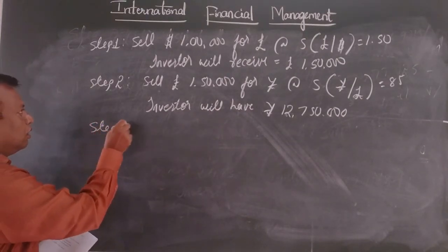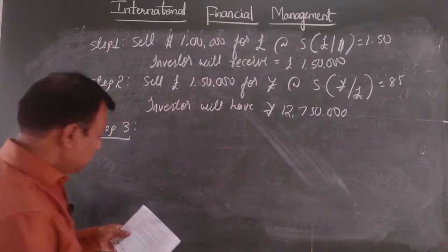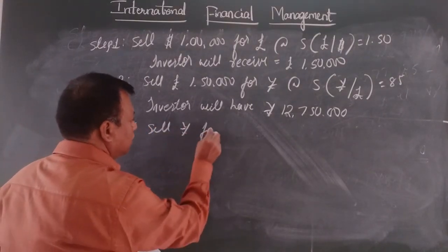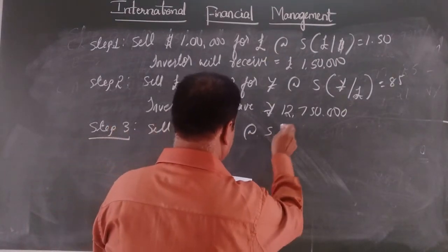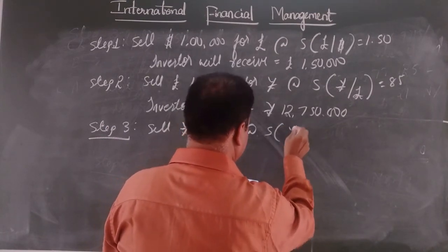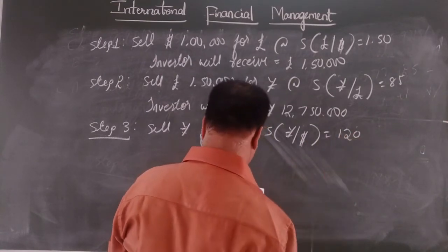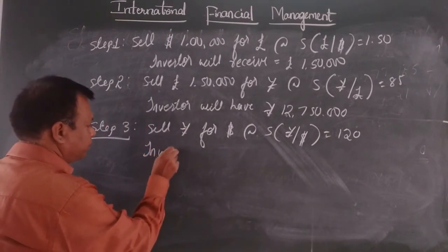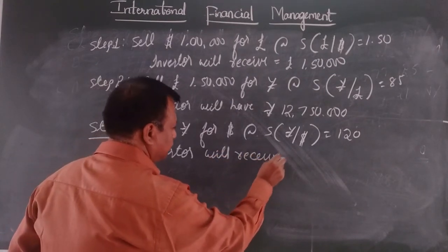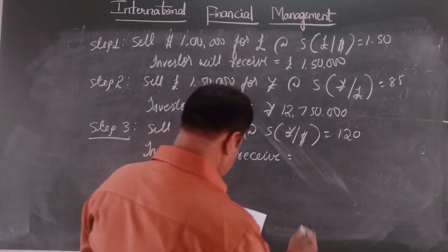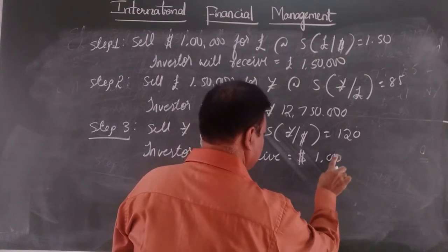So step 3, what we are doing? We are converting back from yen to dollar. Sell yen for dollar at the rate of spot rate of yen by dollar 120. So hence investor will receive how much? Dollar 1 lakh 6,250.